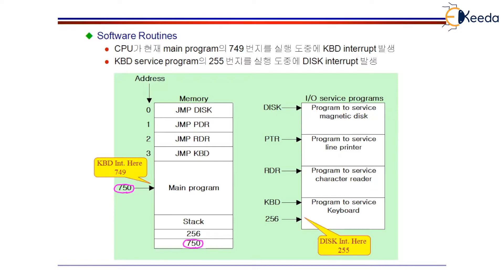How is this going to happen? The addresses 0, 1, 2, 3 have the pointers to the respective locations, in which 0 is a pointer to the disk service routine, 1 is a pointer to the printer service routine, the second location is a pointer to the reader service routine, and the third location is a pointer to the keyboard service routine.